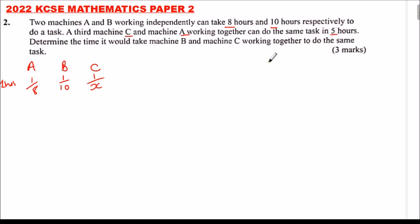This can help us determine the rate at which machine C can complete the job. We say machine A and C: machine A in 1 hour is doing 1/8 and C is doing 1/X. If you add the two, because they are completing the task in 5 hours, they will have done 1/5 of the job.